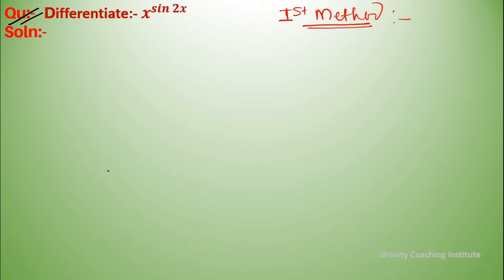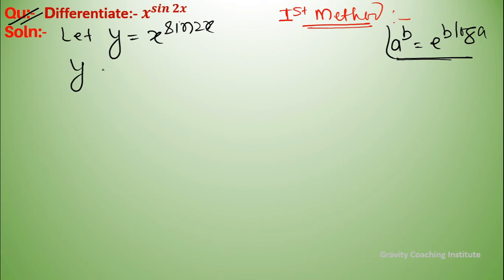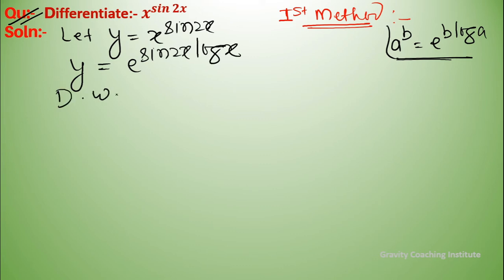Differentiate x to the power sin 2x. First, we let y equal to x to the power sin 2x. Using the formula a to the power b equals e to the power b log a, we write y equal to e to the power sin 2x log x.